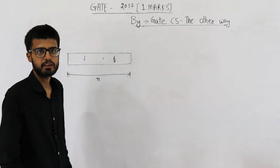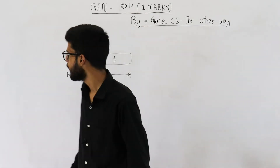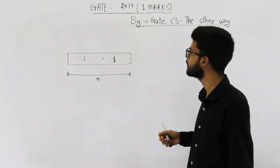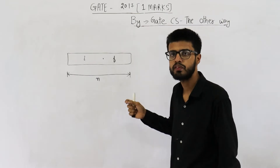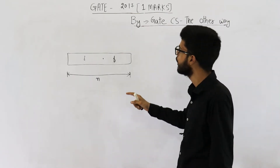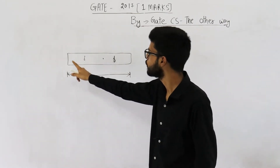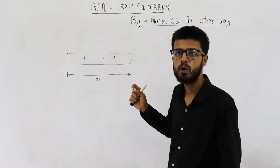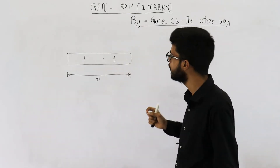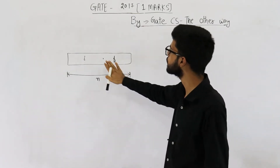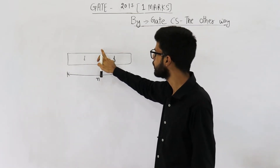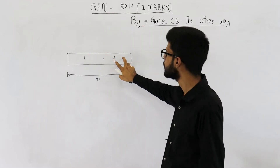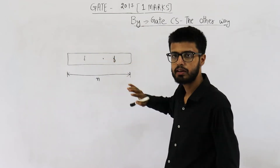What is fixed point representation? When the radix point cannot move, such a representation is called fixed point representation. And when the radix point can float anywhere, such a representation is called floating point representation. In fixed point representation, the number of bits for the number and its fractional part are fixed.